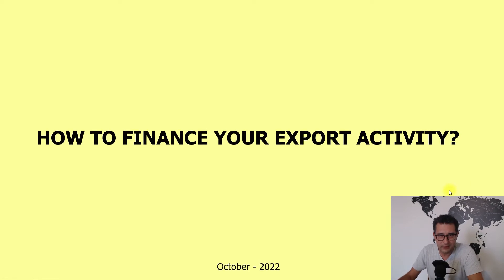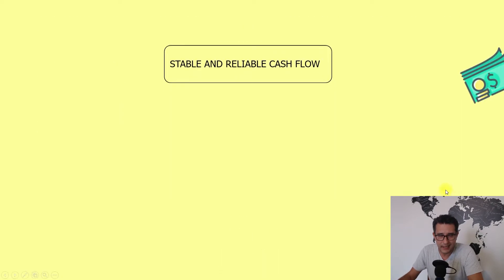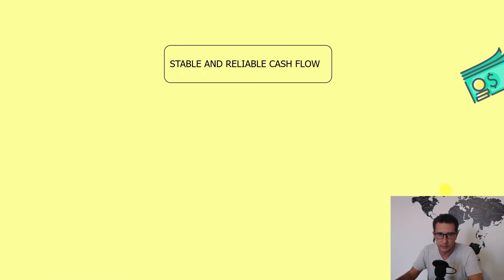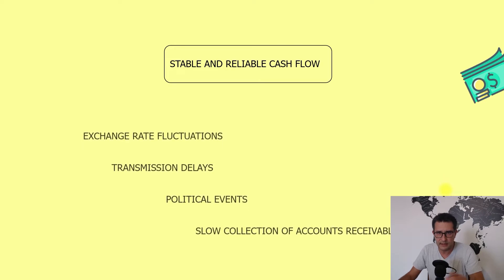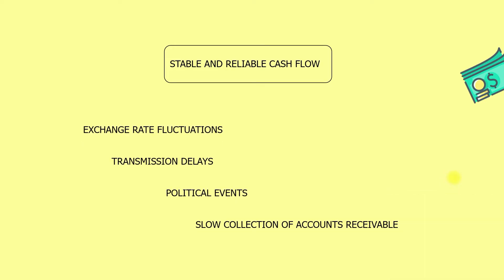From my point of view, a good housekeeping rule — the golden standard in any activity involving money — is to have a stable and reliable cash flow, timing both inflows and outflows. Cash flow planning can help you defend against problems such as exchange rate fluctuations, transmission delays, political events, or slow collection of accounts receivable.